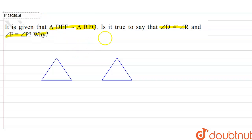Now we know that if two triangles are similar to each other, then their corresponding angles are equal.